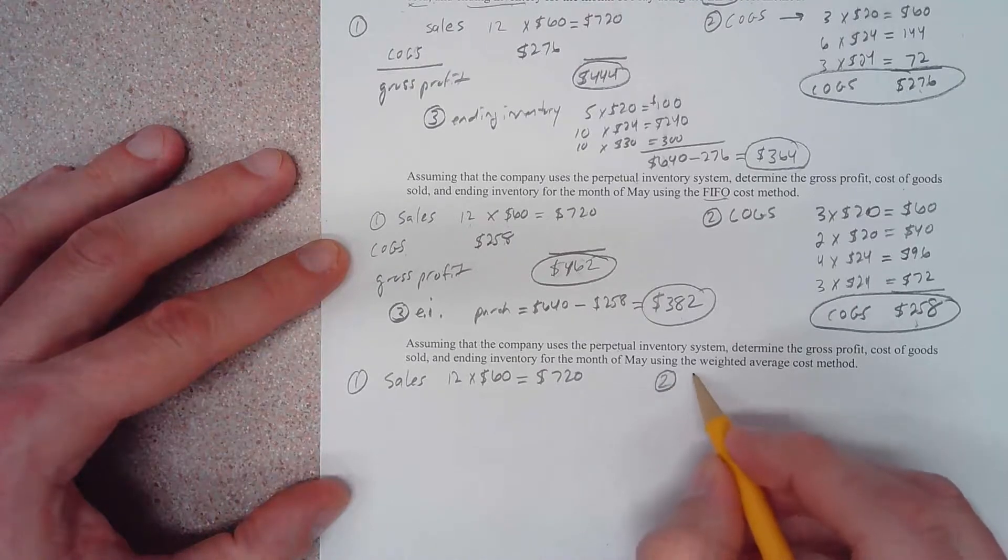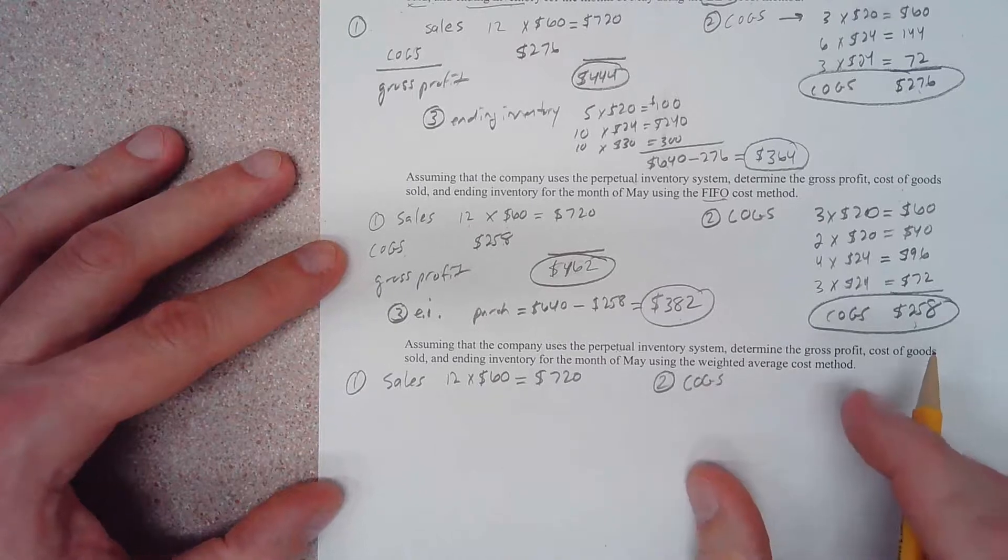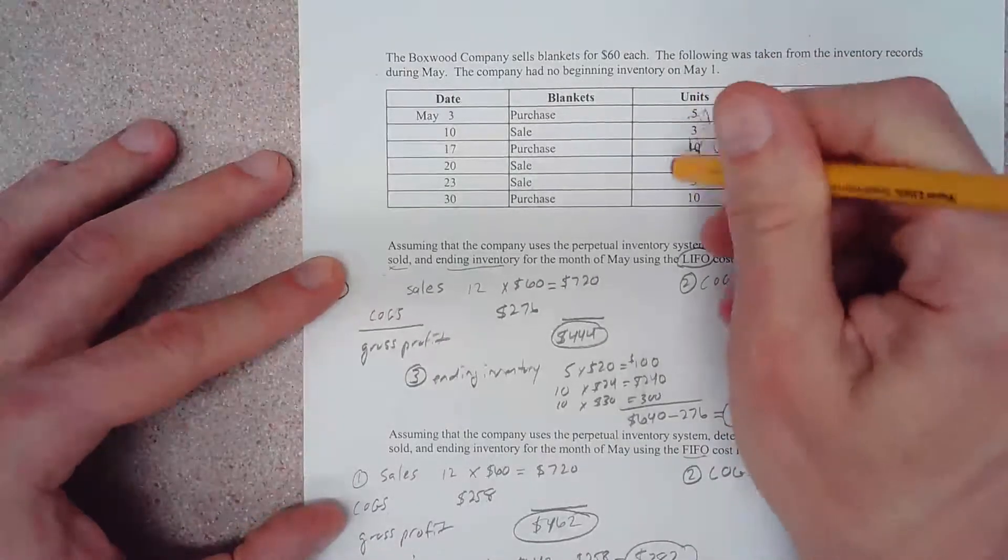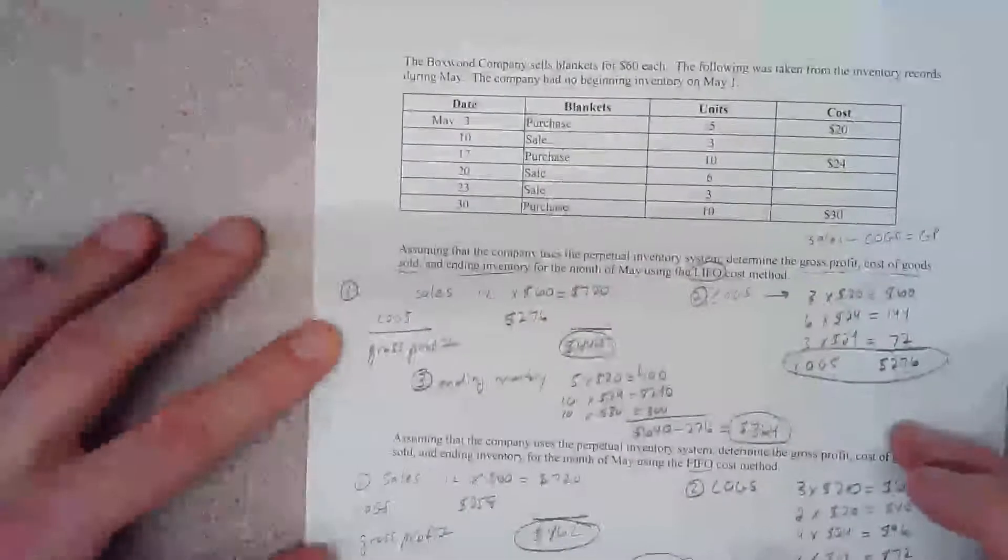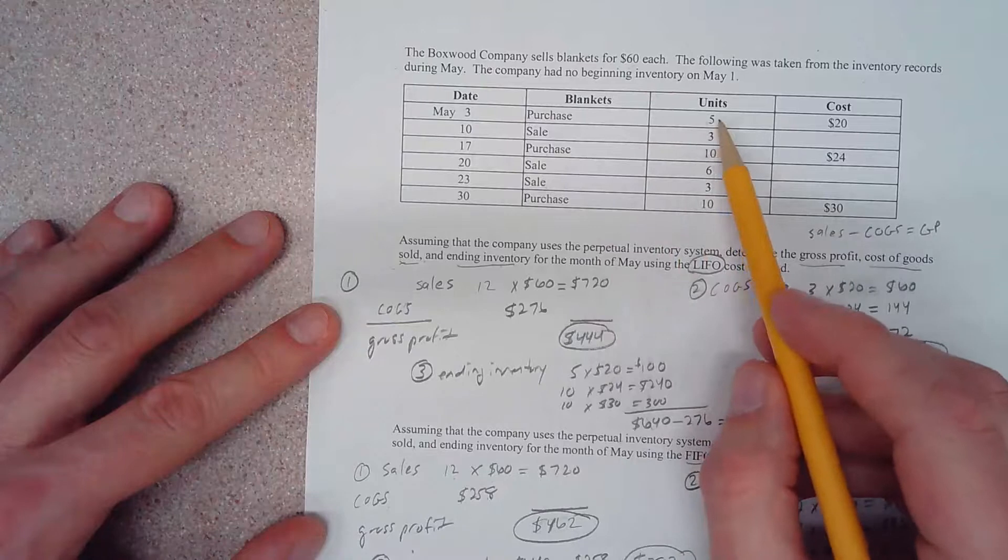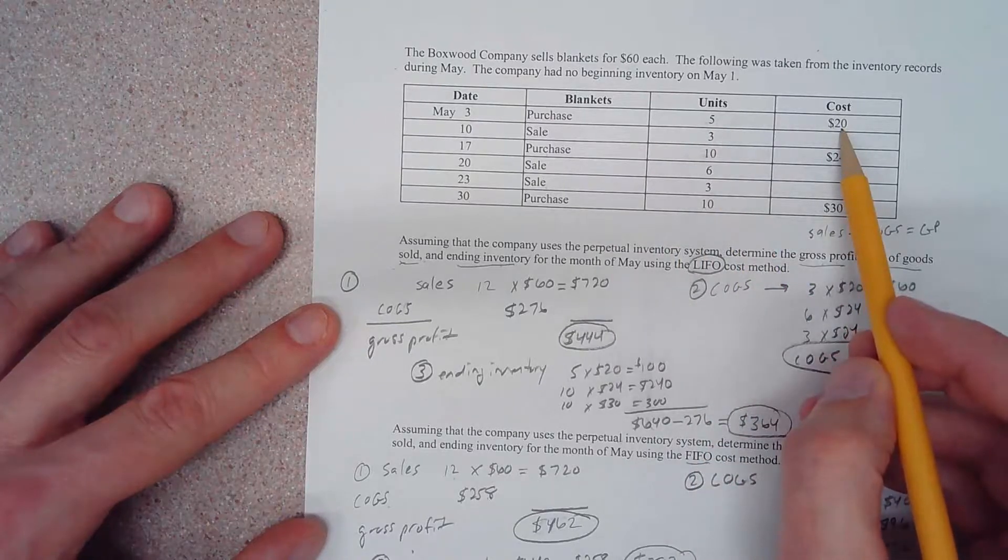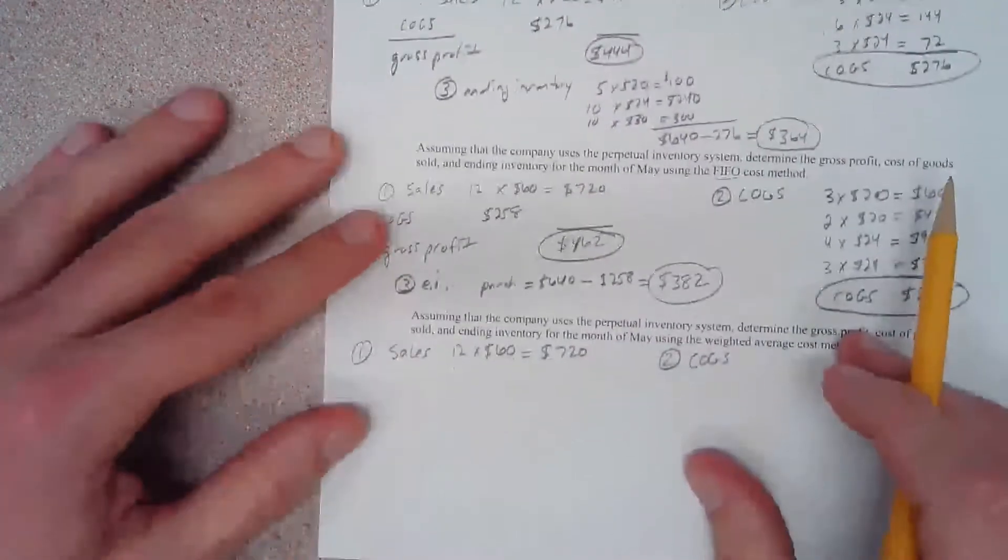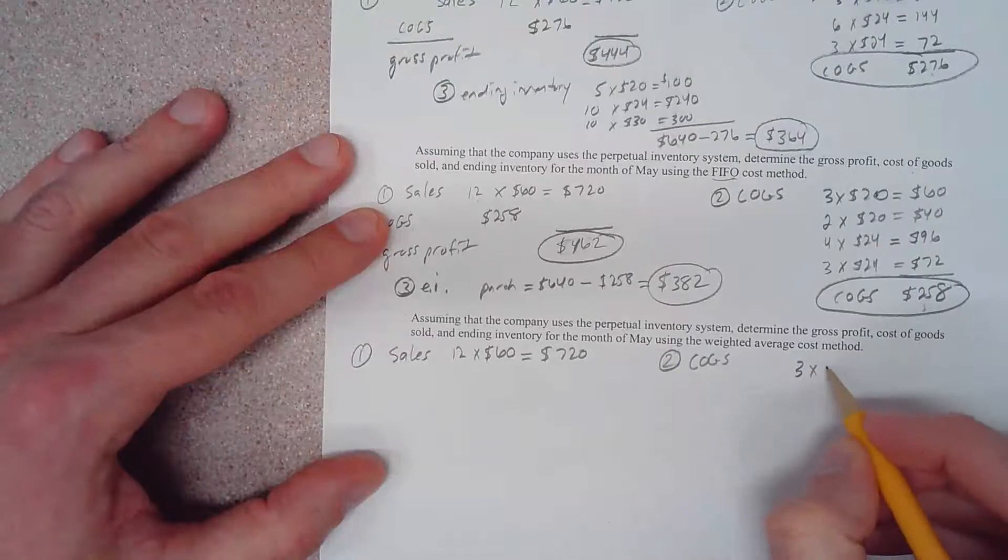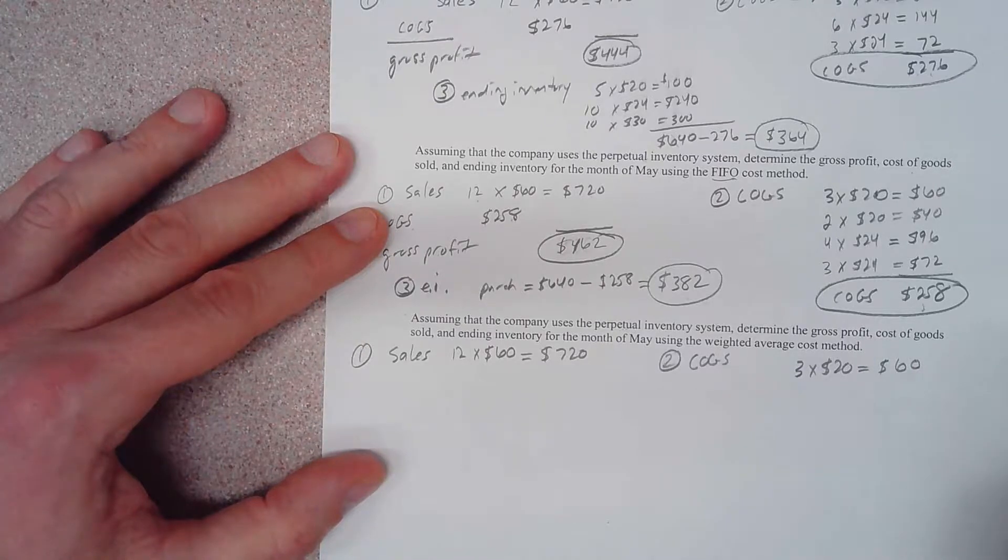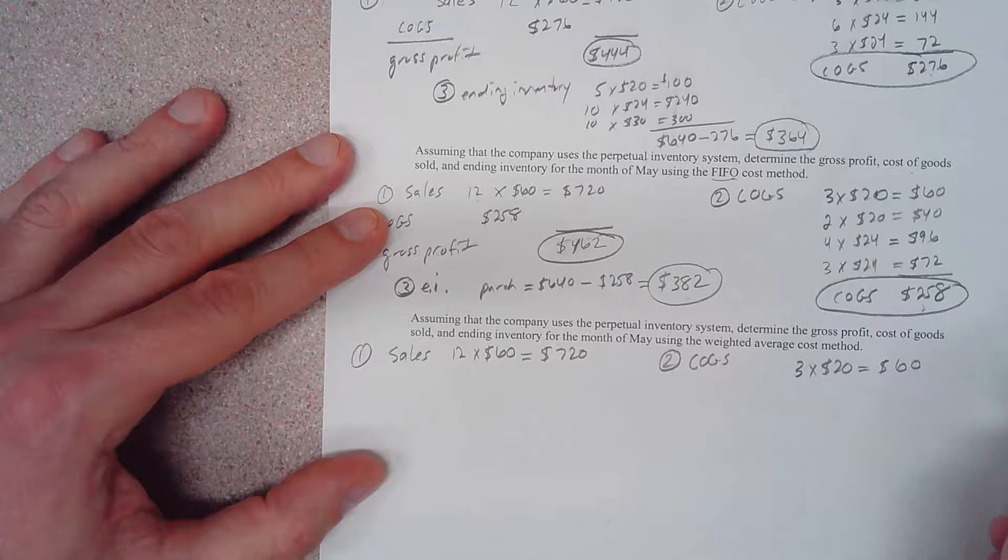I'm going to erase these marks from the previous example. For weighted average, right now after this first purchase we've purchased 5 units at $20 cost each, therefore our average is $20 cost each. So for this first sale, all we have to do is simply say that we sold 3 units at an average cost of $20 each.